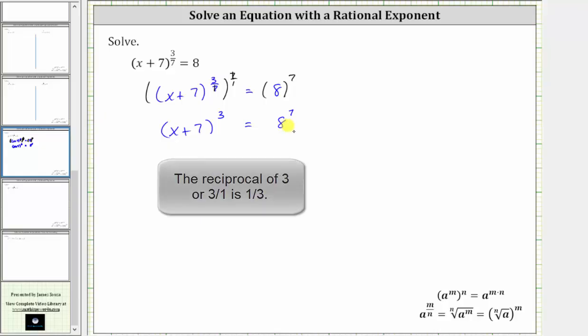Before we do this, I want to make a point. If this exponent was even, we would have two solutions and would need to include a plus or minus on the right. In this case, because the exponent is odd, we will only have one solution and therefore don't include a plus or minus.